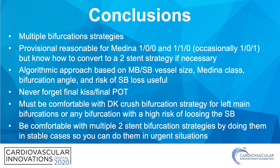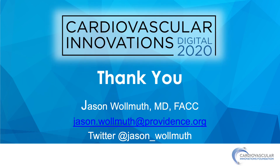In conclusion, multiple bifurcation strategies are available. A provisional approach is reasonable for Medina 1,0,0 or 1,1,0 lesions, but it's important to know how to convert to a two-stent strategy if necessary. An algorithmic approach based on main branch and side branch vessel size, Medina class, bifurcation angle, and the risk of side branch loss is useful. Never forget to perform a final kiss and a final POT. You must be comfortable with the DK crush strategy for left main bifurcations or any bifurcation with a high risk of losing the side branch. Finally, it's important to be comfortable with multiple two-stent bifurcation strategies by doing them in stable cases so that you can perform them in an urgent situation. Thank you very much for your attention.